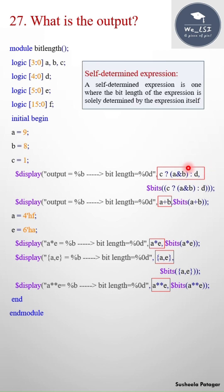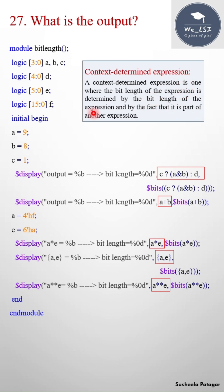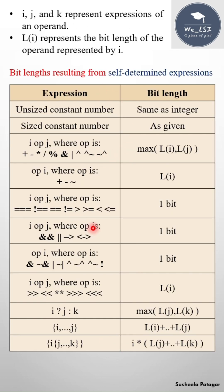So self-determined expression is one where bit length of the expression is solely determined by the expression itself. Context-determined expression is one where the bit length of the expression is determined by the bit length of the expression and by the fact that it is part of another expression. You can use this chart for your reference.